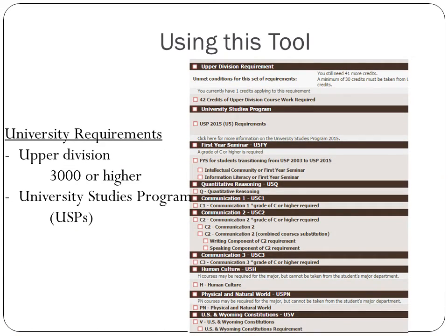Finally, as you scroll down, you'll see the university requirements. There are a couple of university requirements, and these are requirements every student is responsible for regardless of major or college. We see first the upper division requirement — we need 42 credit hours of upper division coursework, which is any course 3000 level or higher. Then we'll see the University Studies Program, which people call USPs. We can see the first year seminar, quantitative reasoning, Communication 1, 2, and 3, human culture, physical and natural world, as well as the U.S. and Wyoming constitution.